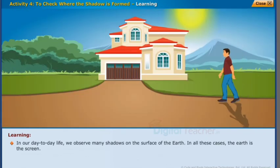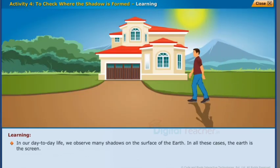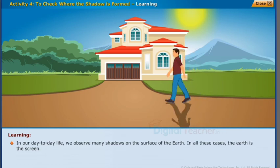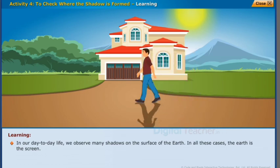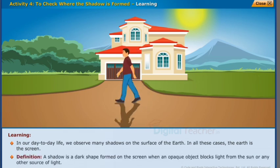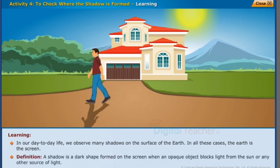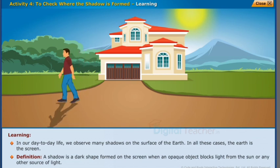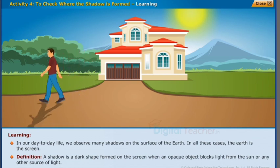In this activity, we used a drawing sheet as a screen to get the shadow. In our day-to-day life, we observe many shadows on the surface of the earth — in all these cases, the earth is the screen. Definition: a shadow is a dark shape formed on the screen when an opaque object blocks light from the sun or any other source of light.